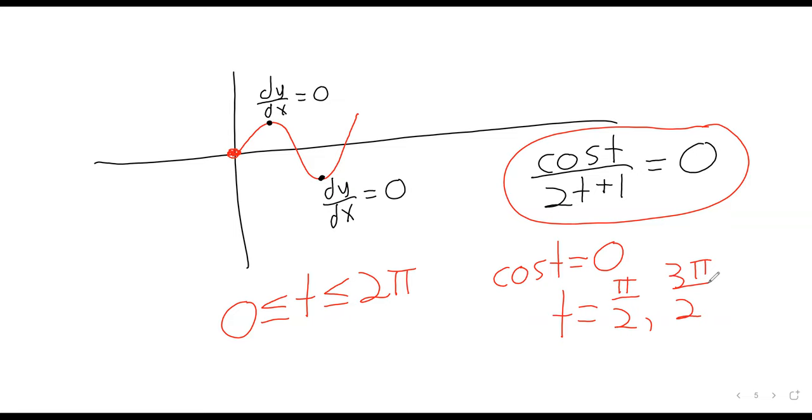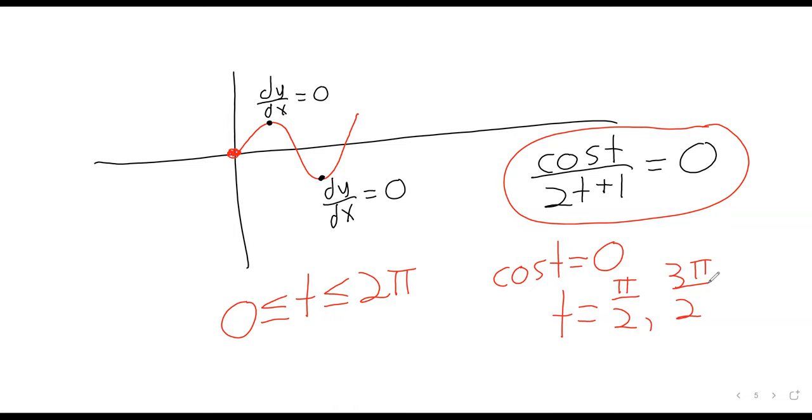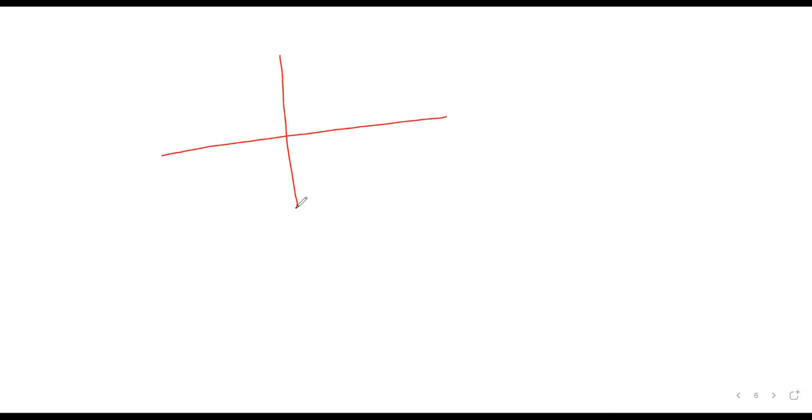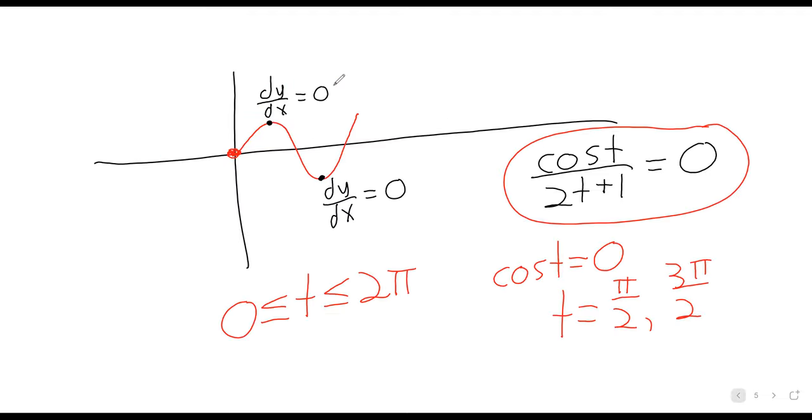And there are two solutions between 0 and 2 pi. And rather than sort of, I keep saying it's the unit circle, there's no need to be cryptic about that. Remember that the cosine is the x-coordinate on the unit circle. And there are two values where the x-coordinate is 0. A right angle, and then that angle there. And in radians, that's pi over 2 and 3 pi over 2. So that's where these come from.